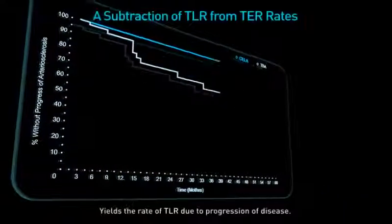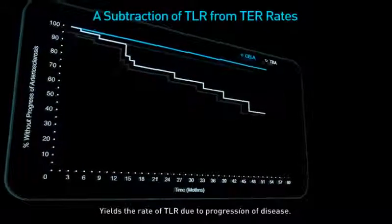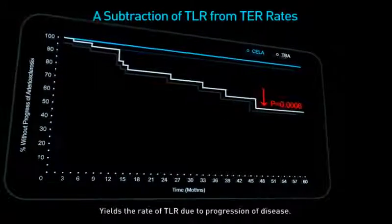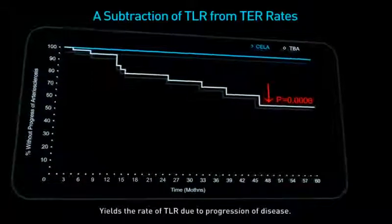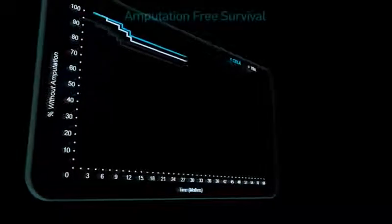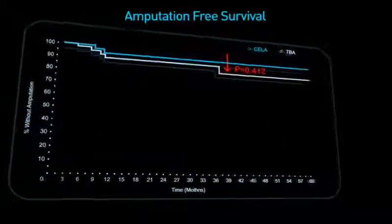Subtracting TLR from TUR rates yields the rate of revascularisation performed due to progression of arteriosclerosis. This was significantly higher post-tibial balloon angioplasty, highlighting the systemic effect of laser on target vessel revascularisation. There was no difference in amputation-free survival: 95% for laser versus 89% for tibial balloon angioplasty.